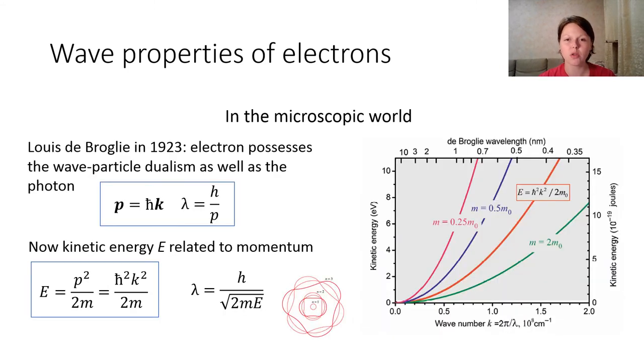But what about the microscopic world? In 1923, Louis de Broglie found out that electron possessed the wave-particle dualism as well as the photon. So, it means that electron is both a wave and a particle.